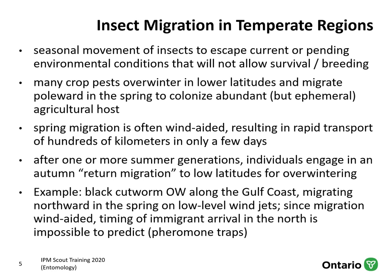A great agricultural pest example is black cutworm. It does not overwinter in Ontario but along the Gulf Coast, and it migrates northwards in spring on low-level wind jets. We don't know when they're going to arrive, so it's important to scout for them using pheromone traps. There's another presentation in this series that talks about making traps work, and we'll cover pheromone traps in that session.